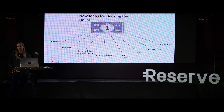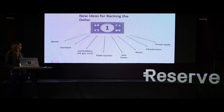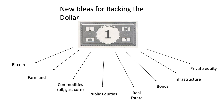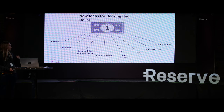So if we think about new ideas for backing the dollar — moving away from gold, silver, or the full faith and credit of the U.S. government — we could back it with something like Bitcoin, which is similar to gold in having limited supply and belief network effects. You could back it with farmland, which has limited supply and produces utility. You have commodities, which are pretty good inflation hedges; public equities that are actually creating new value; real estate, which is an inflation hedge plus generates rents; and then bonds, infrastructure, and private equity. So the idea is we could base a new currency on one of these major asset classes.